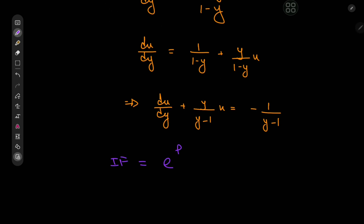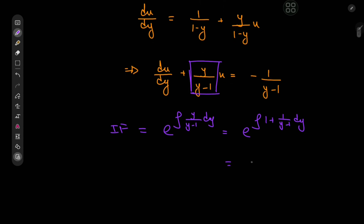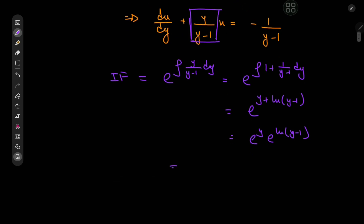The integrating factor is e to the integral of the function of y attached to the u variable, so we have y divided by y minus 1 dy. This sorts out to e to the integral of 1 plus 1 by y minus 1 dy. On integration we have e to the y plus log of y minus 1, which expands to e to the y times y minus 1 as our integrating factor.